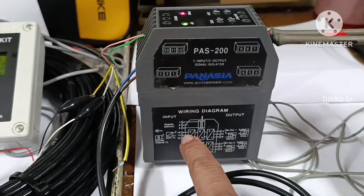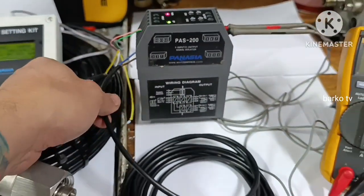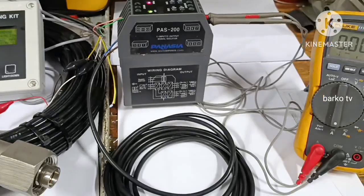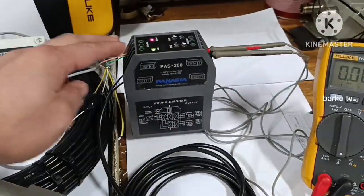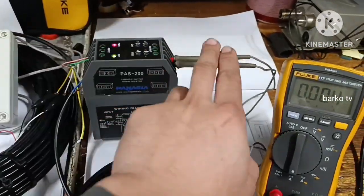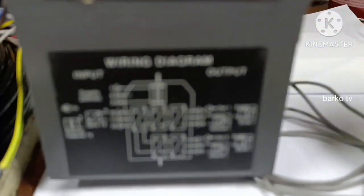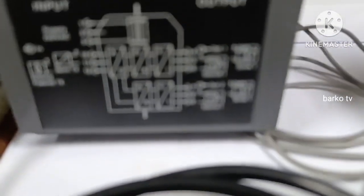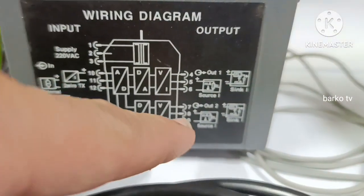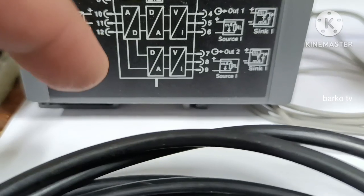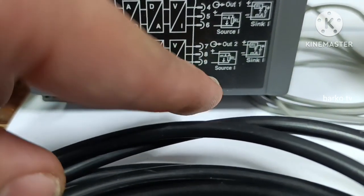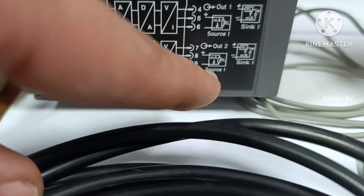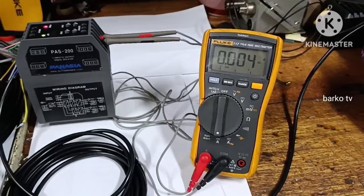The two wires pink and green going to this module, input 4 to 20 and output. There are two outputs also 4 to 20, channel 1 and channel 2. One input and then two outputs. Channel 1 is going to the alarm system and channel 2 is digital indicator or vice versa.